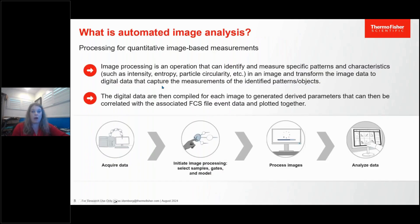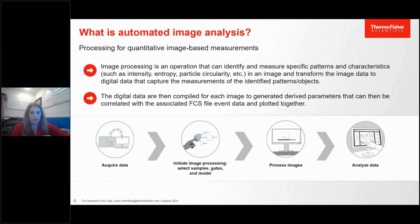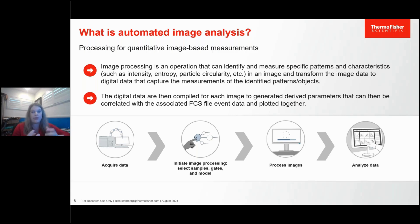Taking the image is only the first part of the operation. Once we have the image, we use software to identify and measure specific patterns and characteristics inside the cell, such as the intensity, entropy, particle circularity, et cetera. We transform this image data into actual data that you can plot on histogram plots and dot plots, just like your familiar flow cytometry data, allowing high-throughput analysis of cell populations and their morphological features. This is then combined with your flow data into an FCS file, giving you two datasets — one very high-parameter, 23-parameter dataset — from the same sample.